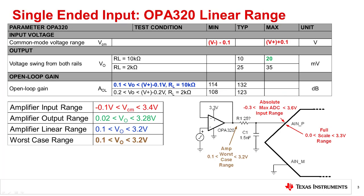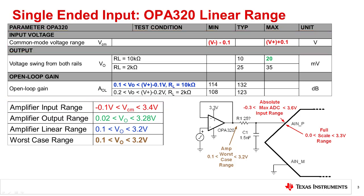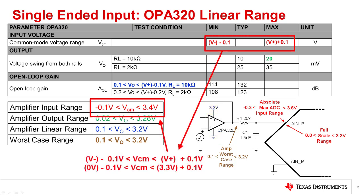Now let's look at the amplifier's linear range for the same example. Several factors have an impact on the amplifier's linear range: the amplifier's input range, the amplifier's output range, and the amplifier's linear range. The amplifier's input range, shown in red, is set by the common mode range specification in the datasheet. For a buffer, the common mode voltage and input voltage are the same. For this example, the amplifier's supplies of 0 volts and 3.3 volts are used with the common mode specification to compute a common mode range of negative 0.1 volts to 3.4 volts.